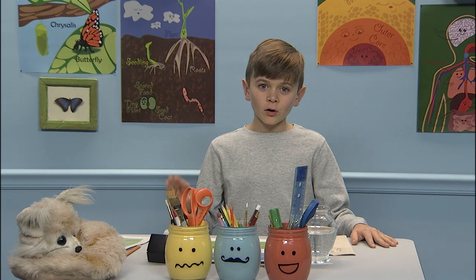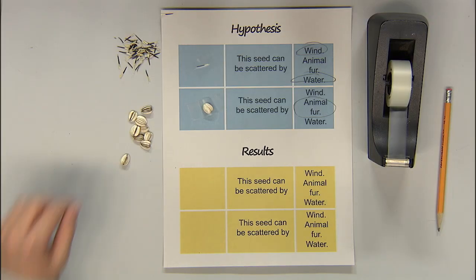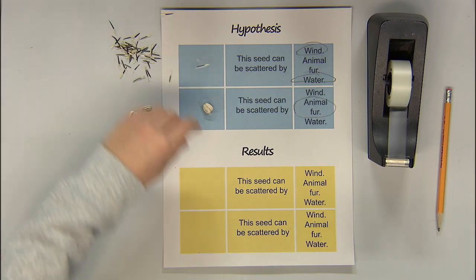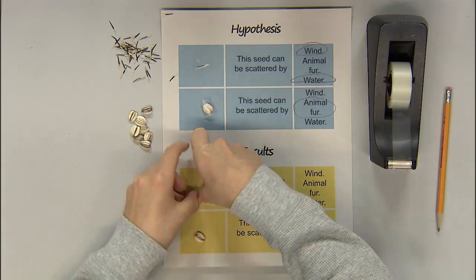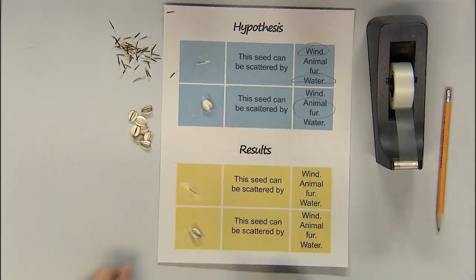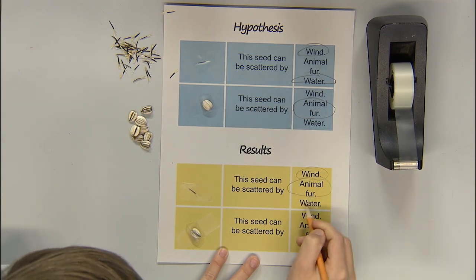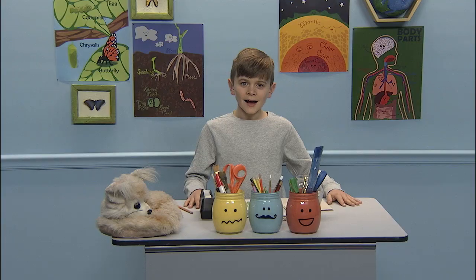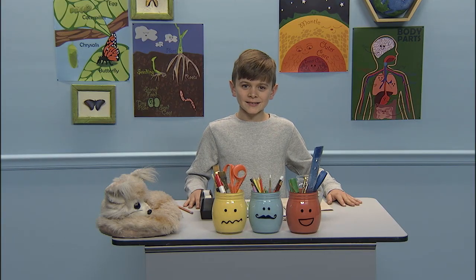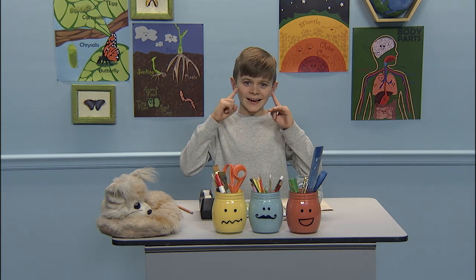Now that we've done all three experiments, we're going to classify our results and compare them with our hypothesis. I'll tape my marigold seed here and my sunflower seed here and mark the results over here. Now, let's compare the results with my hypothesis. Wow, I guess there were some things I didn't know about seeds. I love doing experiments and learning new things. Science comes alive when we see it and do it.